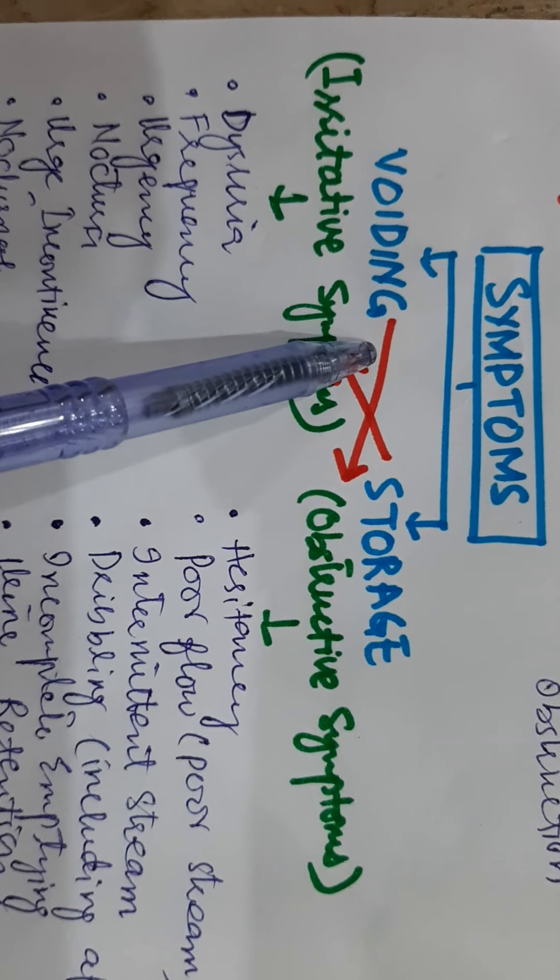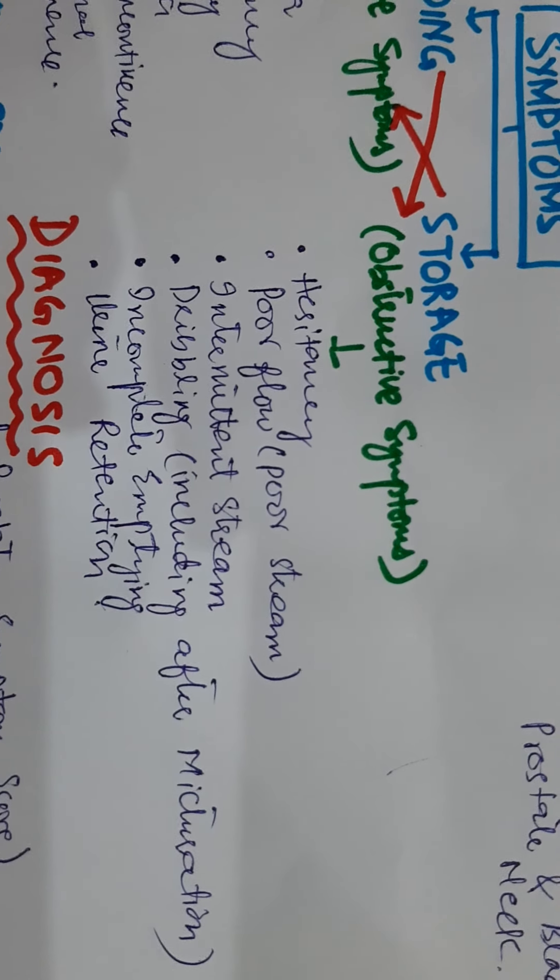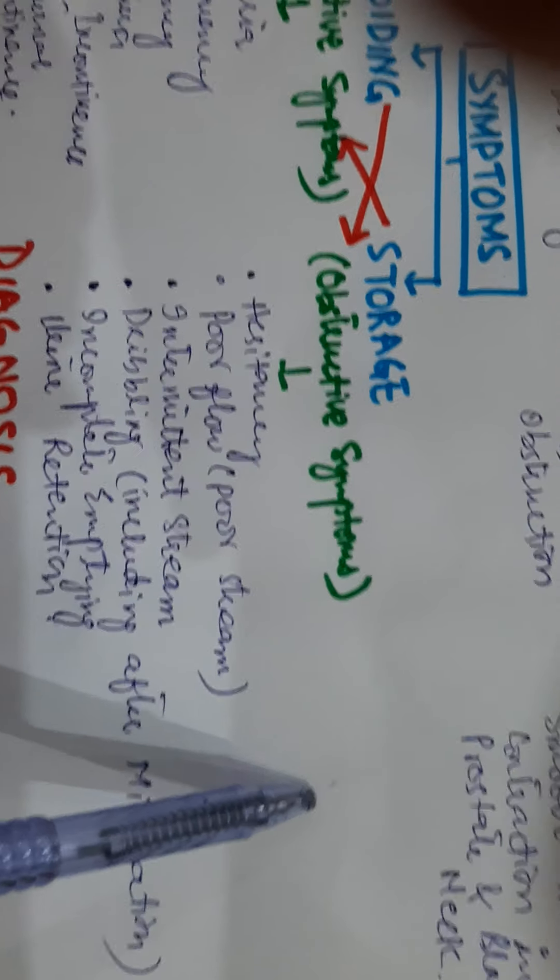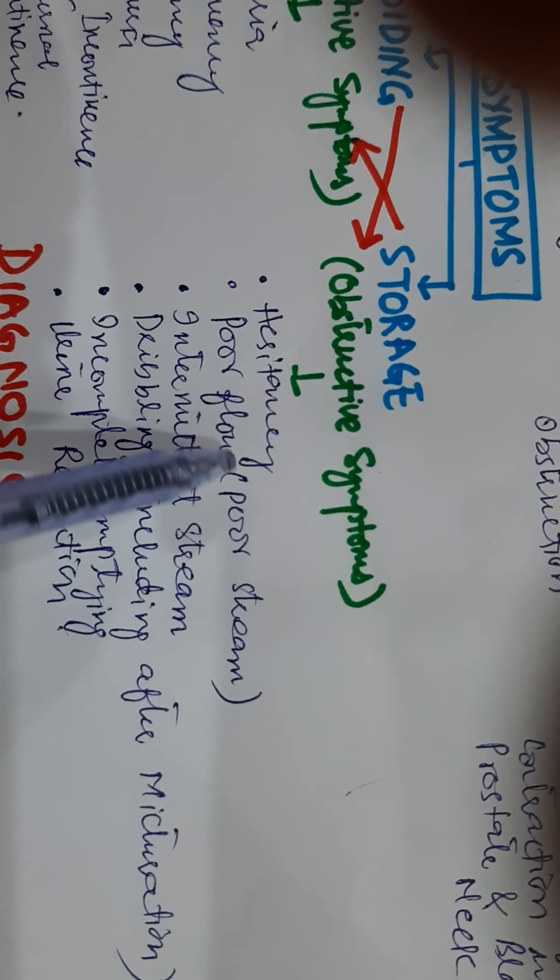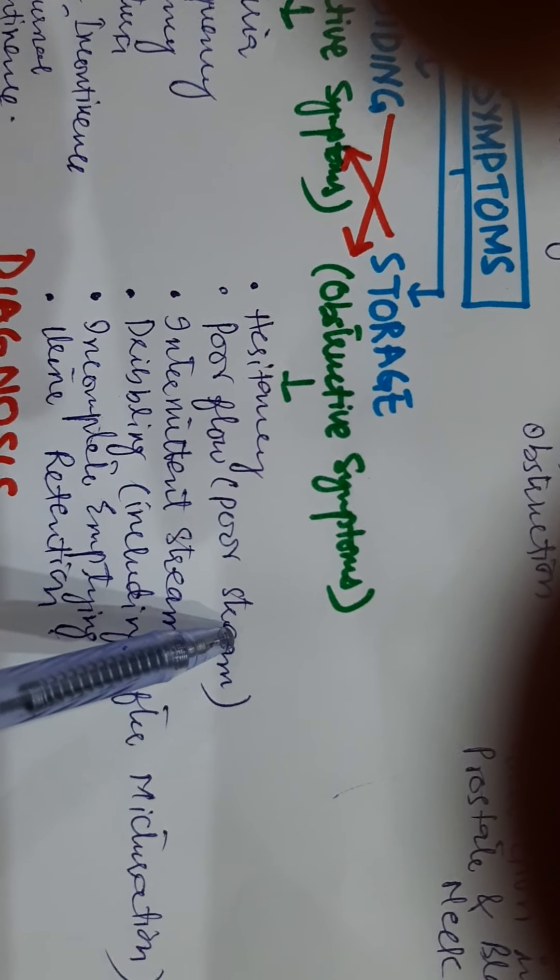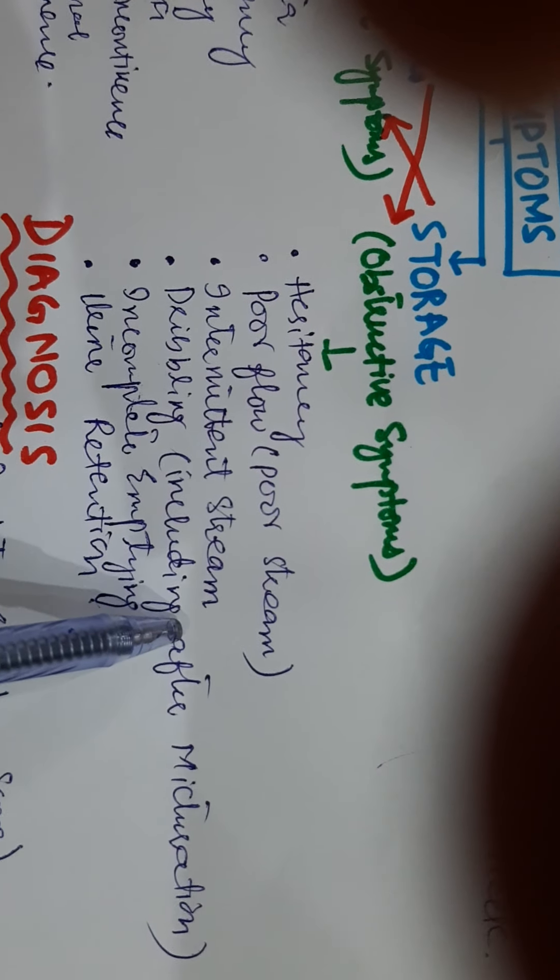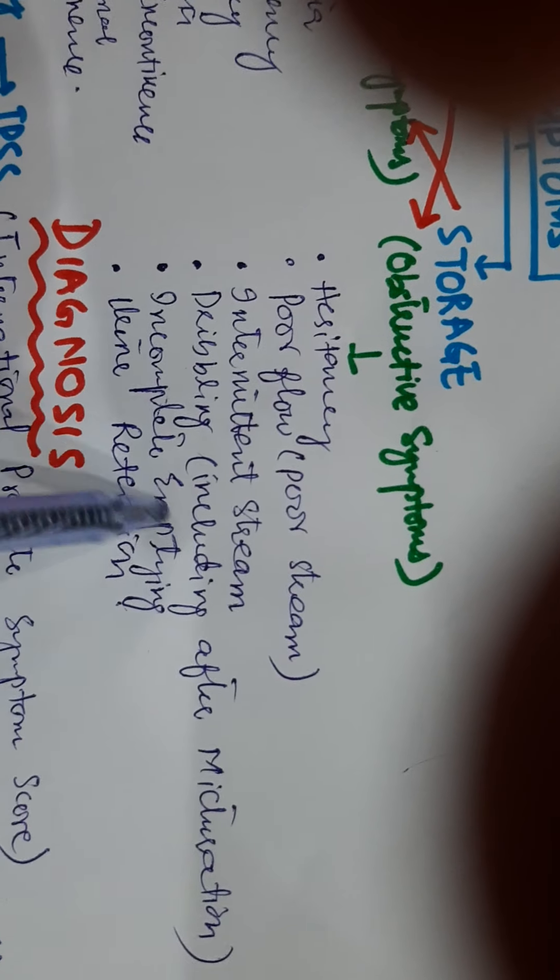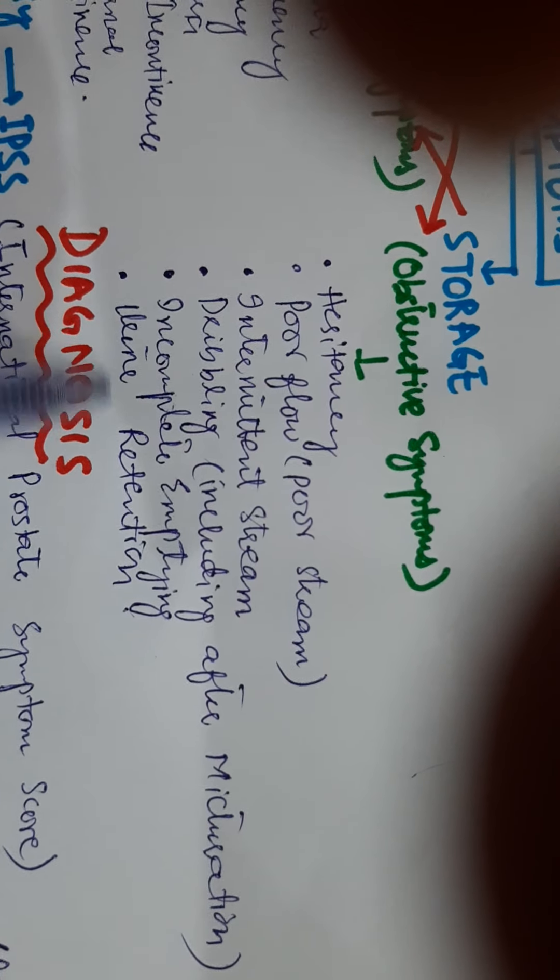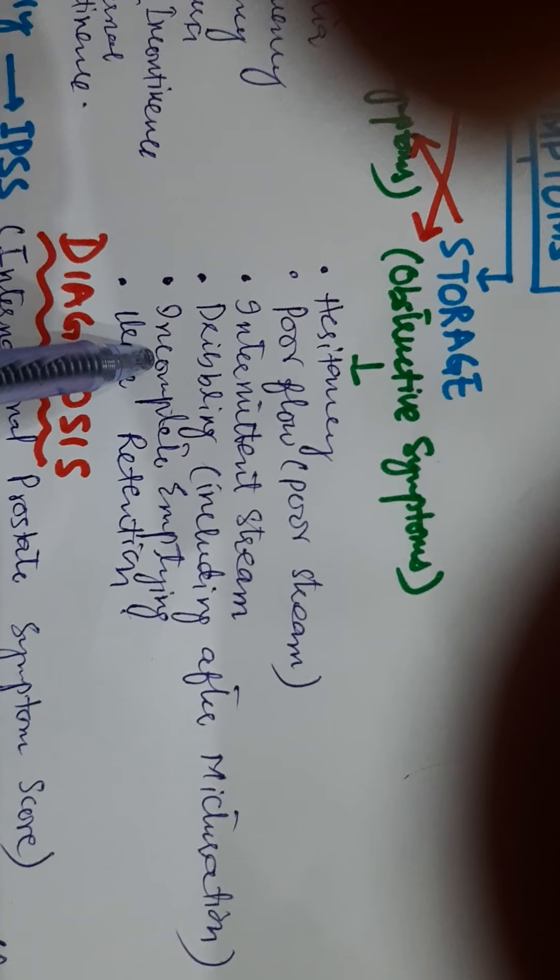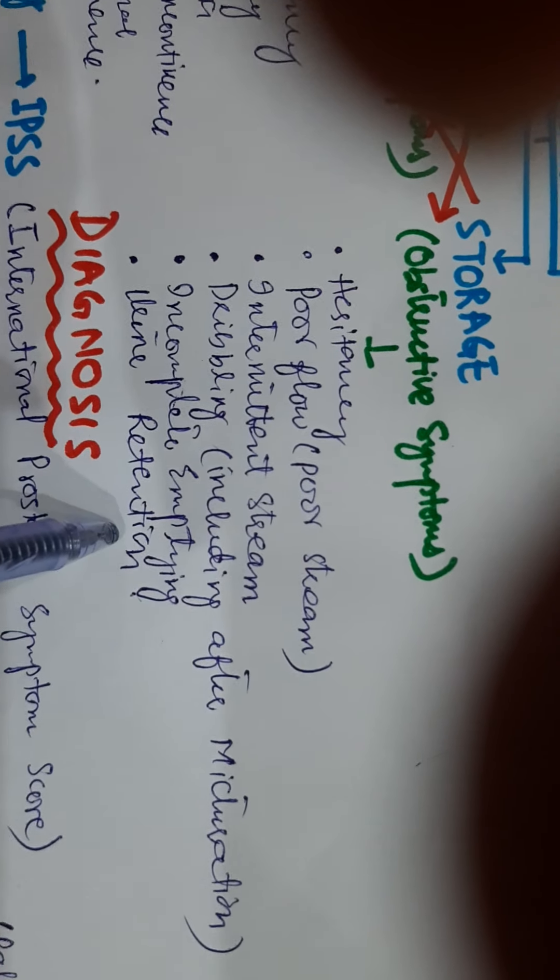Voiding difficulty causes obstructive symptoms: hesitancy, which means the patient has to wait for urination to start and worsens if bladder is very full; poor flow or poor stream, which means decreased urine flow with less caliber of the stream, unimproved by straining; intermittent stream, where the stream stops and starts during micturition; and dribbling, including after micturition, where drops fall after the end of urination. Incomplete emptying is the sensation of poor bladder emptying, and then urine retention.